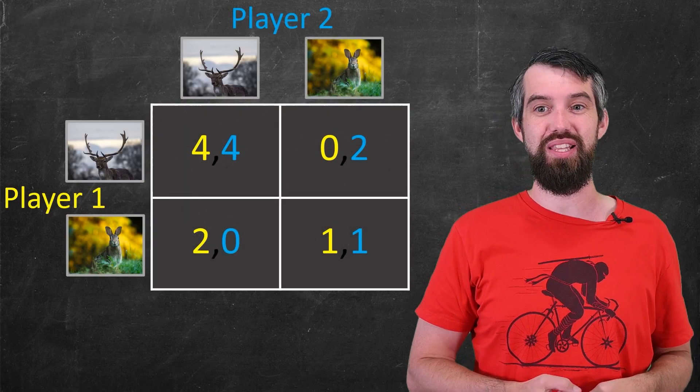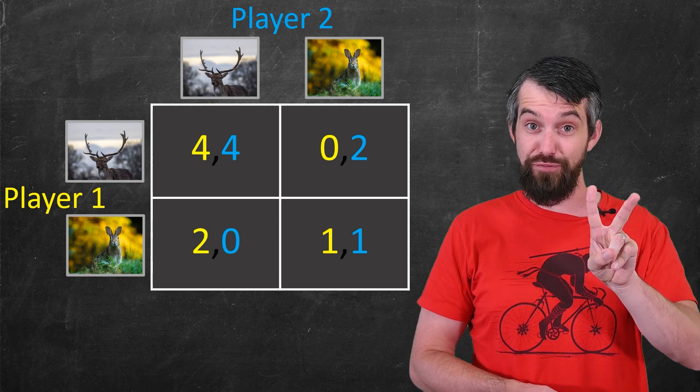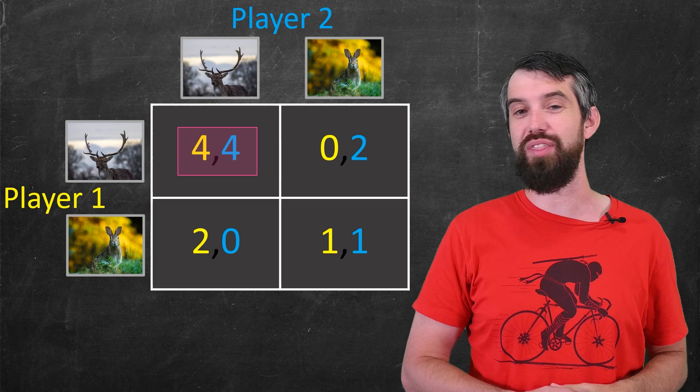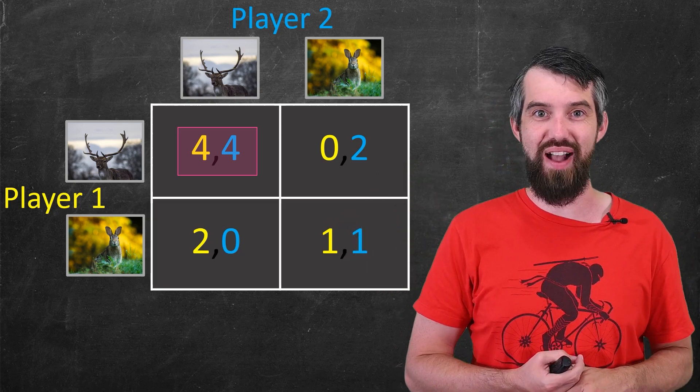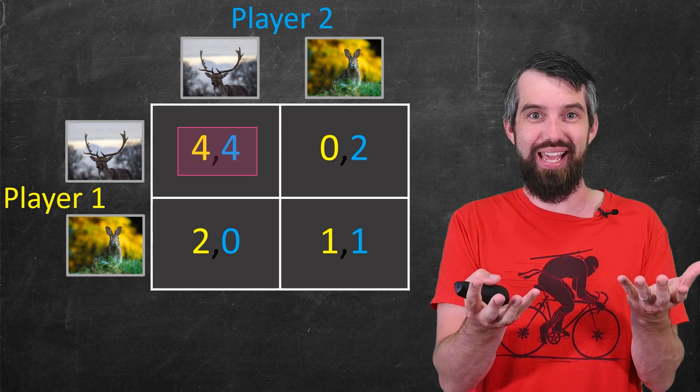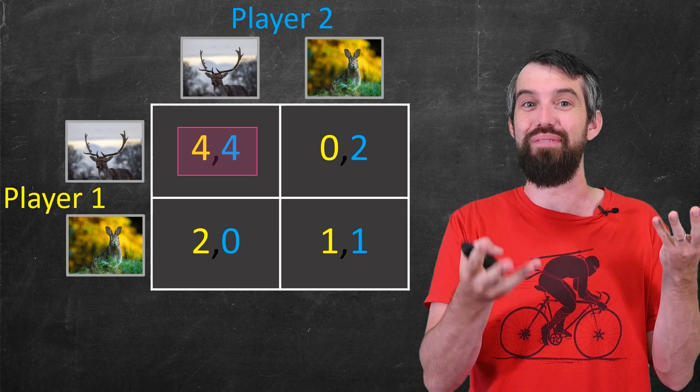Okay, so are there any Nash Equilibriums in this stag vs hare game? Actually, there's two. The first of them is the one we already identified, the 4-4 where both play stag. I mean, if this is the case and you find out both players are playing stag, you'd be like, great! We get the best payoff. We both get four. Nobody's going to want to leave that. They're at the best possible spot.